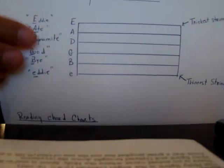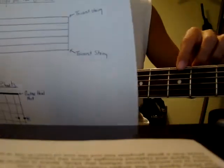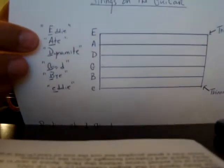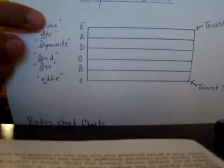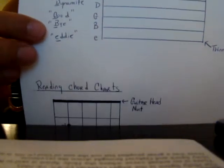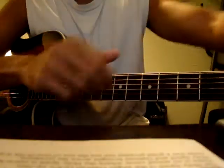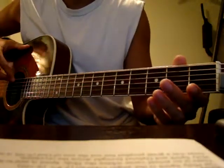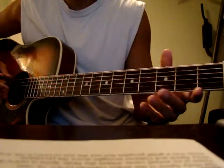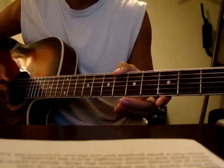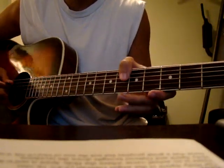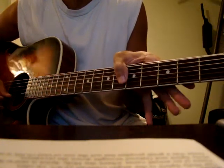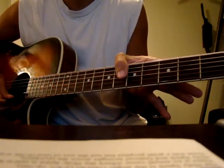Now, the strings on your guitar, starting from the thickest string, number six from the top — a good way to remember it is: Eddie ate dynamite, goodbye Eddie. So that's how you remember those strings. You've got low E on top, then A, D, G, B, and high E.